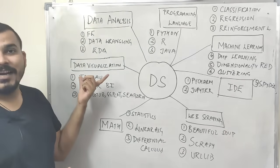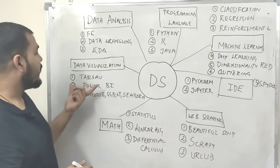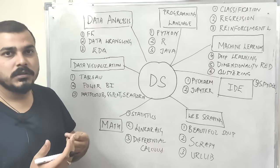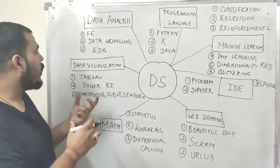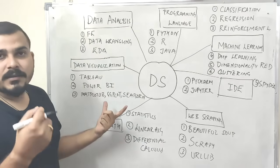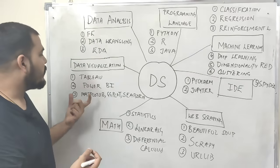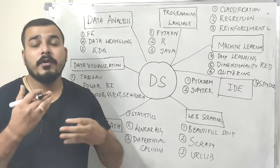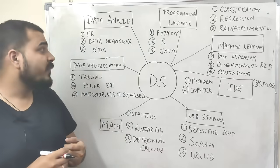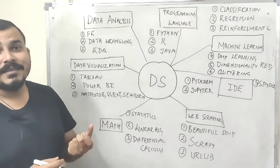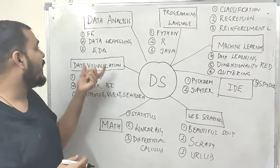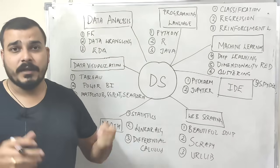Then you need to know data visualization. I have written Tableau and Power BI. These are different tools where you'll be able to do a lot of data visualization. Apart from that, in Python and R you have different libraries like Matplotlib and Seaborn, which help you do visualization with respect to your code. Then you go to the data analysis stage, which is very important where you do feature engineering, data wrangling, exploratory data analysis and many things.